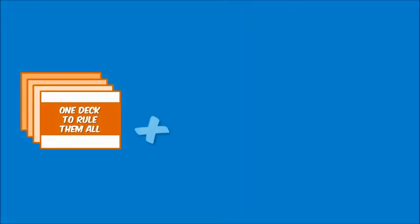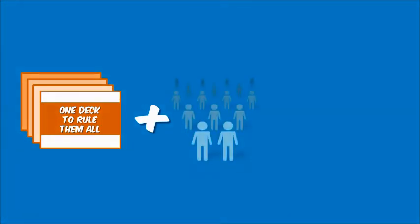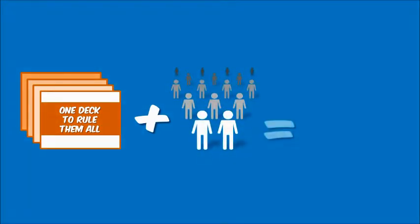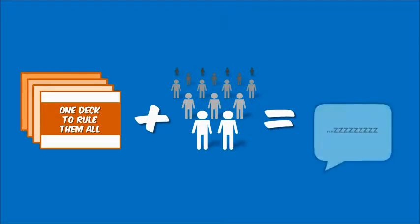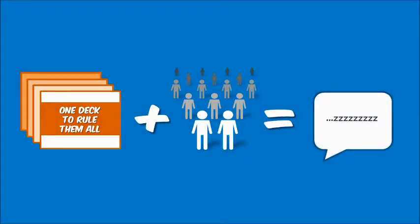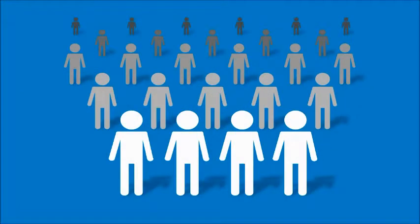People seem to want to make a single design that does all things for all people, but the problem is that what makes a design good isn't the same for everyone. Different audiences want different things, so no surprise — when you try to design something that works for everyone, you end up with something so bland and generic that it works for no one. Plus, trying to include all the information that anyone might ever want tends to make things a bit of a content dump.